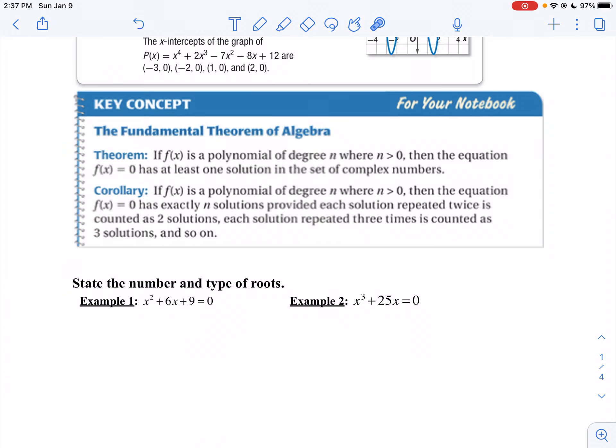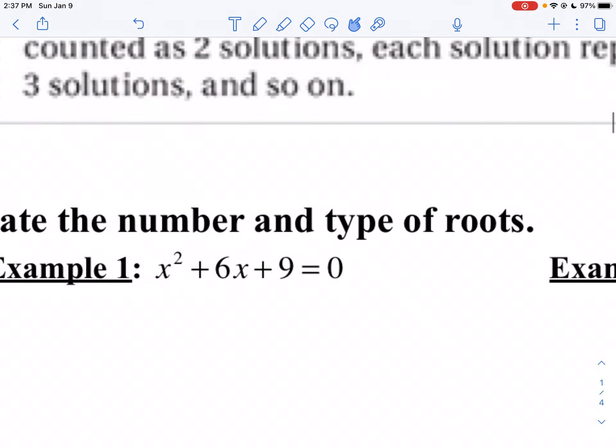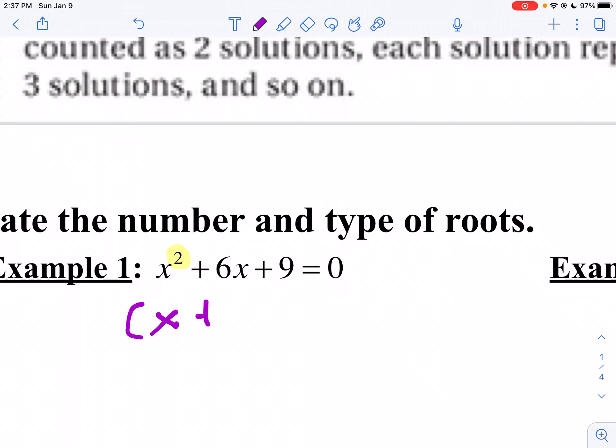So if I look at example one here, I've got x² + 6x + 9. That tells me I'm going to have two roots. Well, let's find those two roots here. Now, I notice I can factor this. So this is (x + 3)² = 0.